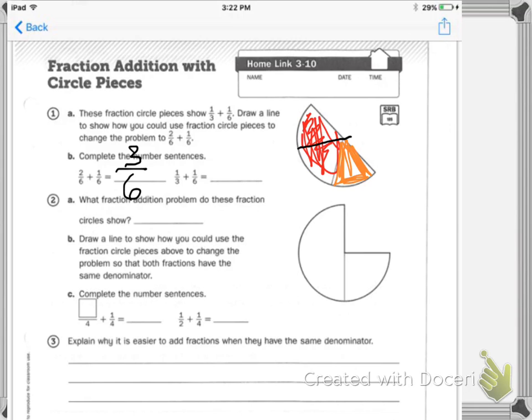Then it says one-third plus one-sixth. Well, here's my one-third plus a sixth. What does it equal? Three-sixths.